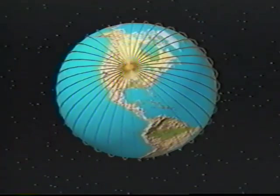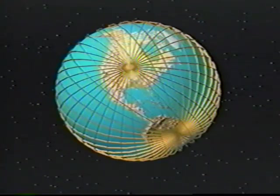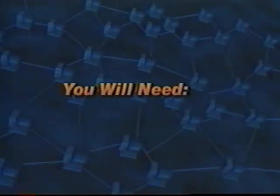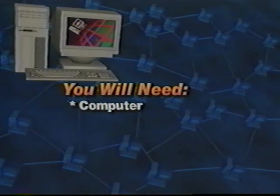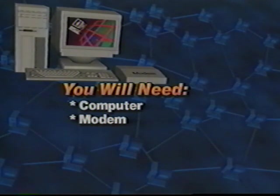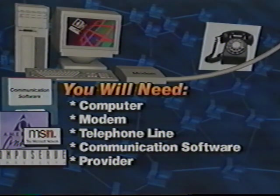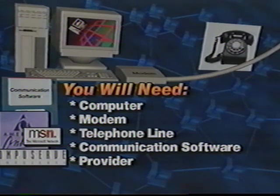The beauty of the Internet is that we don't have to know about how it works. We can just accept the fact that it does work smoothly, easily, and seamlessly on a worldwide basis. Let's start by listing the things we need in order to gain access to the Internet. The computer is the first item on the list. Your computer must have a modem that is connected to a telephone line. You'll also need data communication software and a provider to gain access to the Internet.